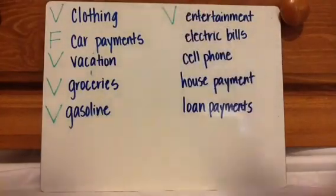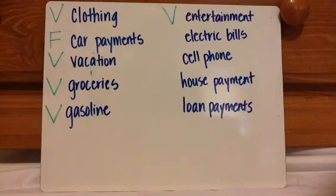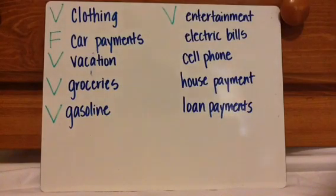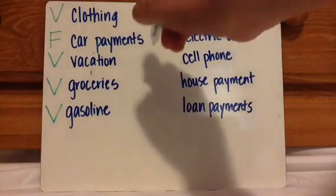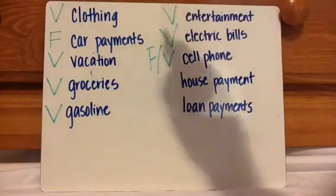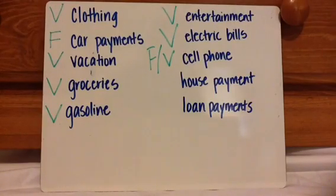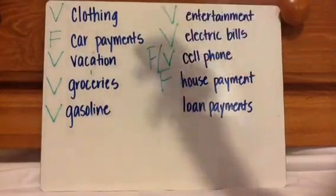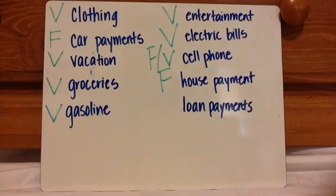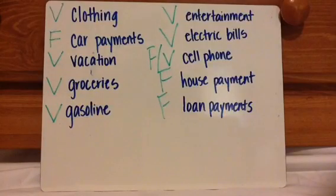Entertainment is variable — the first time you go to the theater you might just buy movie tickets, the second time movie tickets and popcorn, the next time nachos, or you bring a friend so it's two tickets. Electric bill is variable too, because it depends how much electricity you use — you might not even be home most of the month, so the bill will be lower. Cell phone bill is kind of a debate: it should be fixed, but if you go over your minute or text limit, it becomes variable. House payment is fixed — same amount every month. Loan payments are the same: fixed.